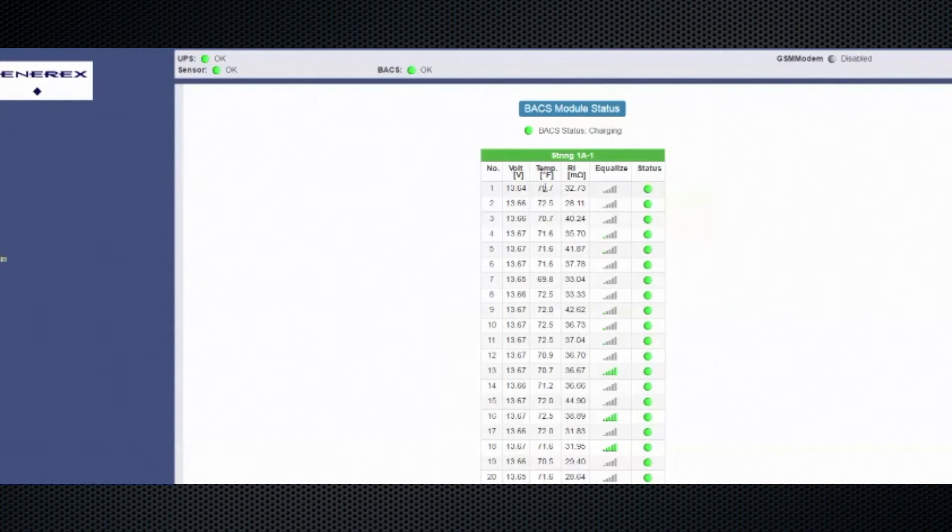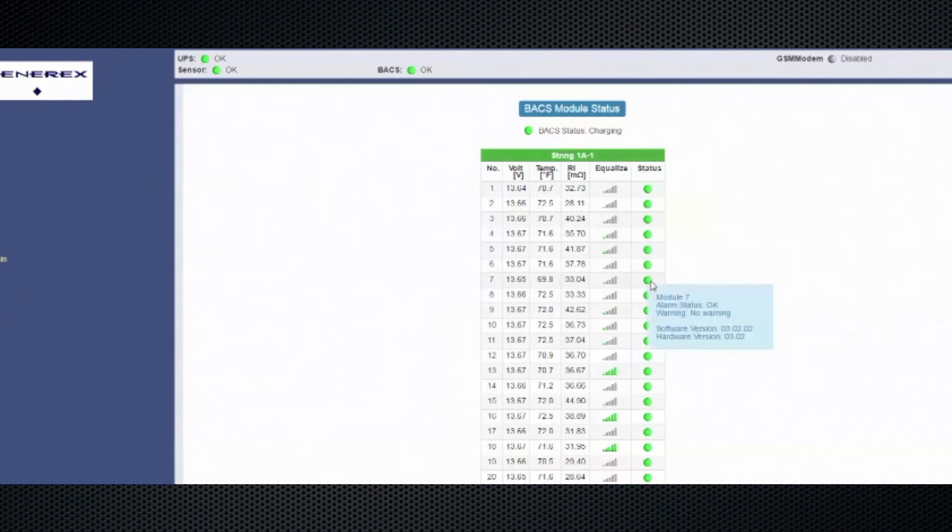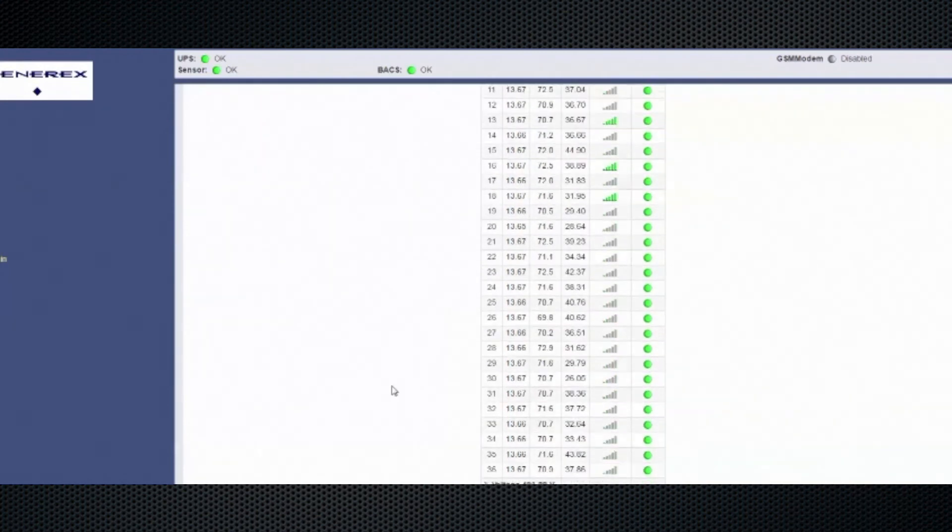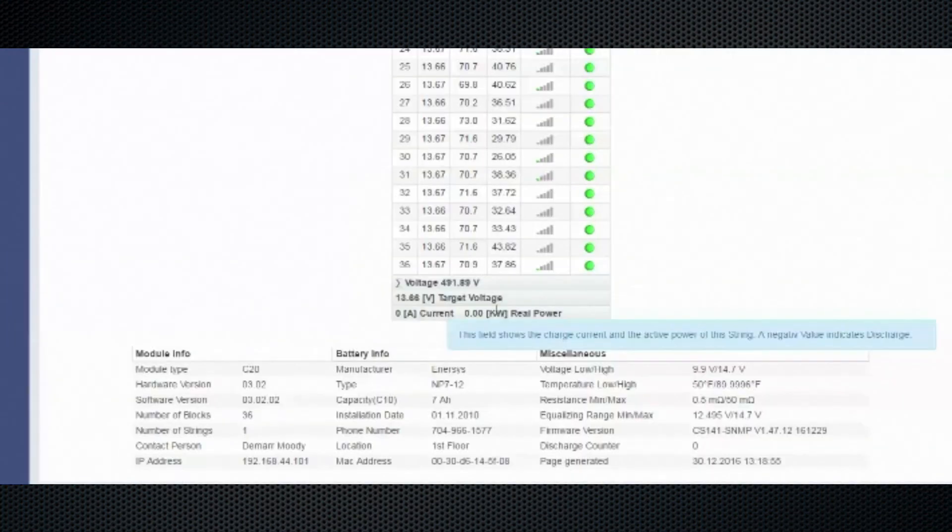On the web manager you have the Bax status screen. From the screen you can show all your battery voltages in real time. You can sort each value by voltage, temperature, or numbers. It shows you your total voltage on the system, your target voltage, and your current levels. It also shows you module types and software versions, battery information, contact information, battery alarms, and firmwares.